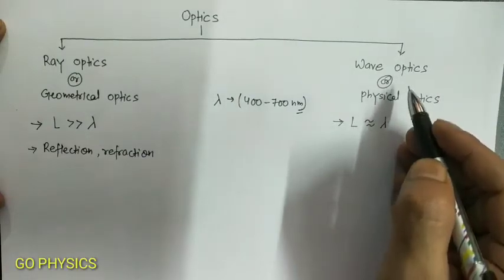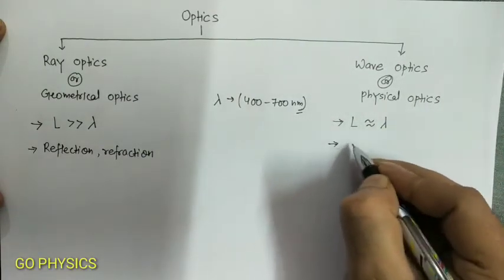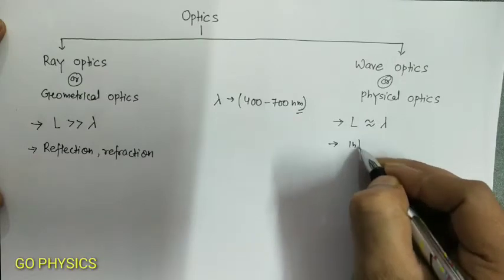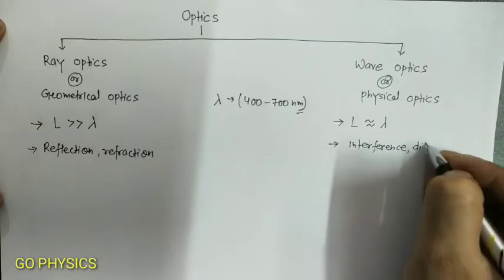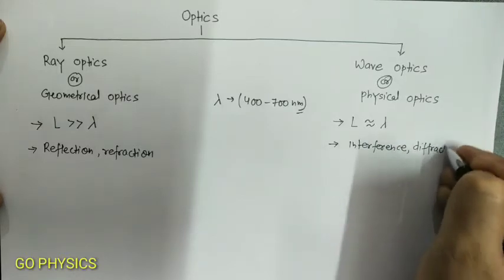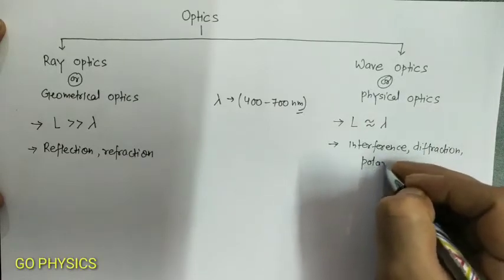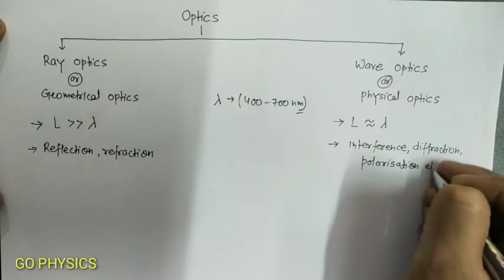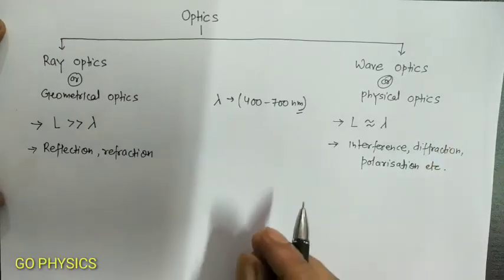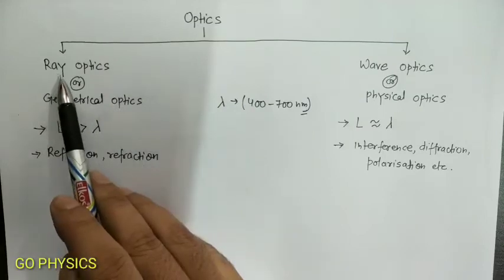In wave optics we study the phenomena like interference, diffraction, polarization, etc. So first we are going to start with ray optics.